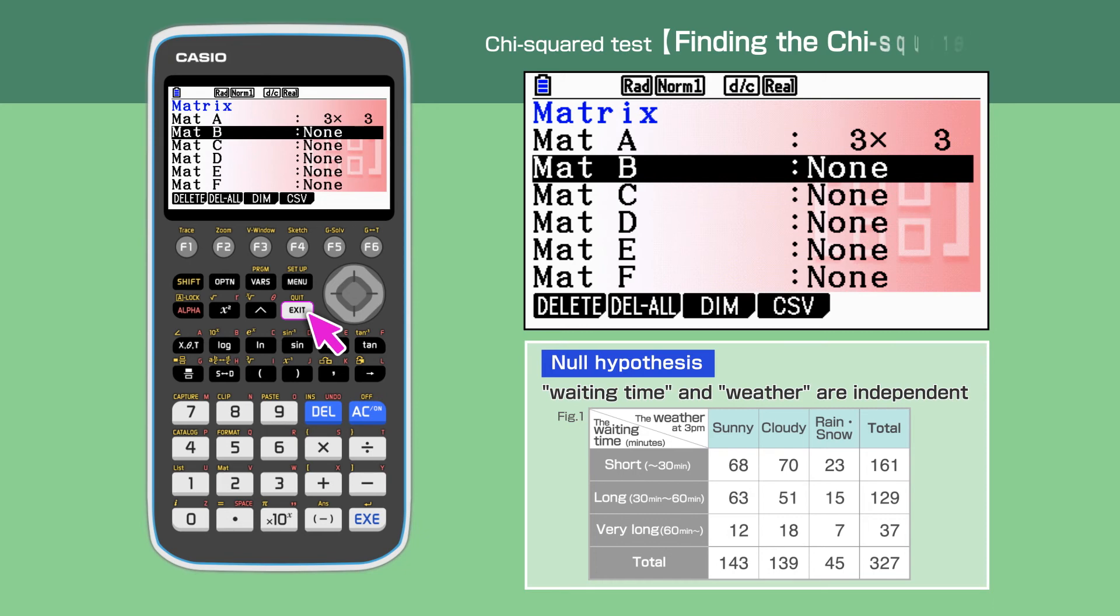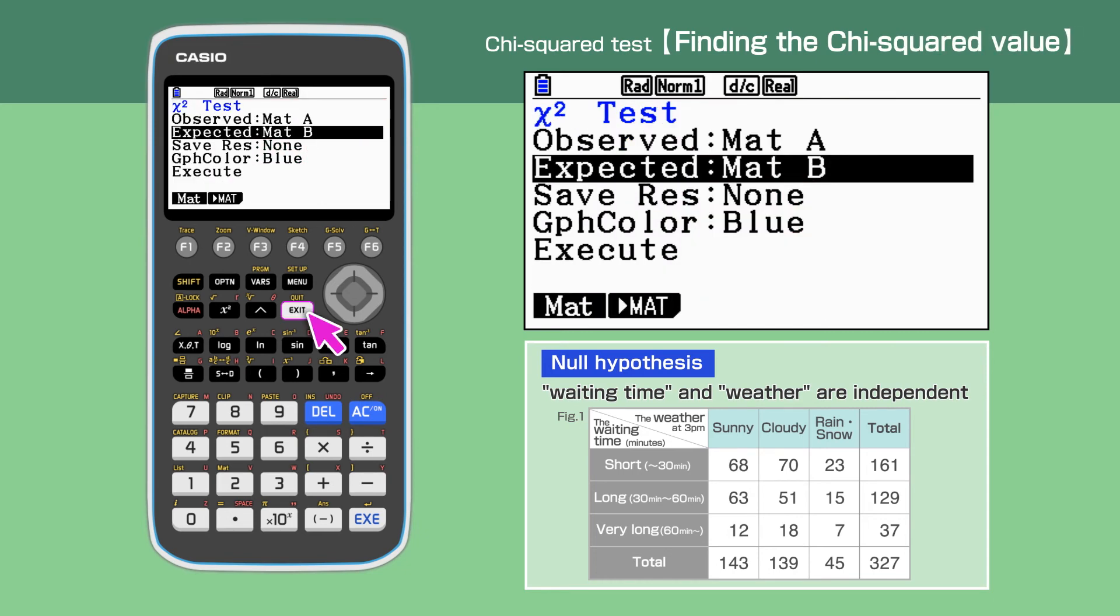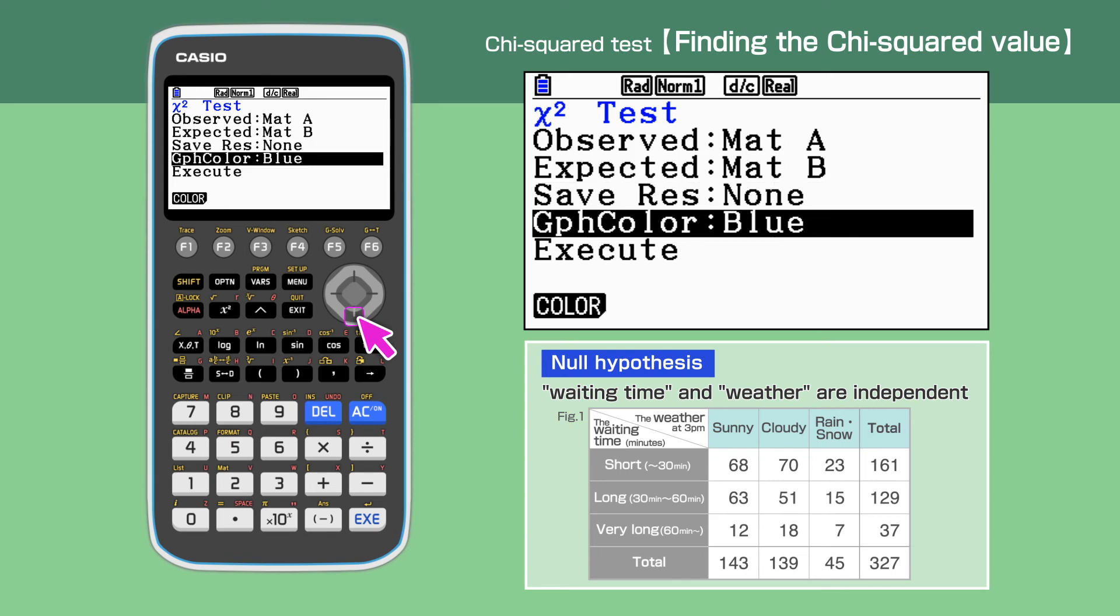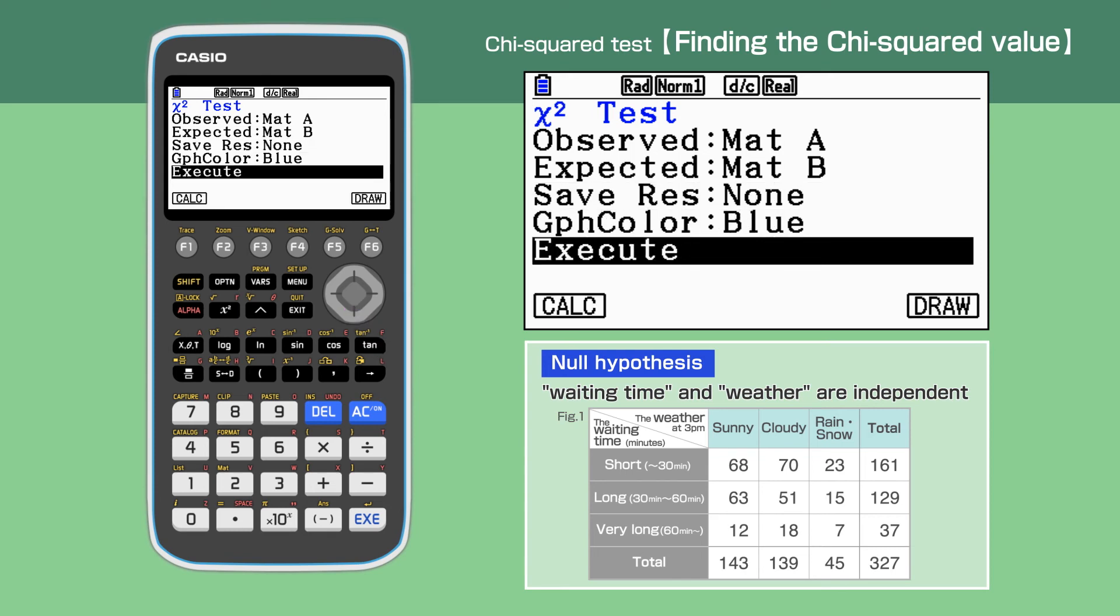Press exit then exit to go back to the original chi-squared test screen, then highlight execute to work out the chi-squared value. Press F1 to calculate.